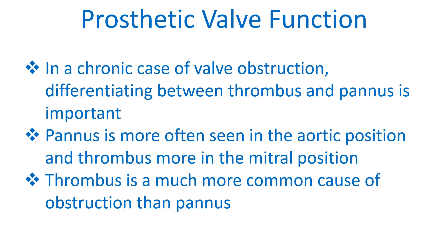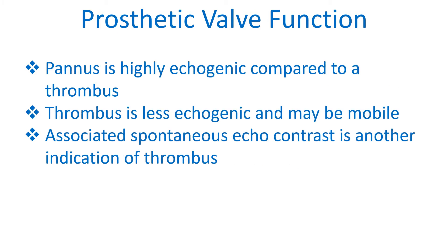In a chronic case of valve obstruction, differentiating between thrombus and pannus is important. Pannus is more often seen in the aortic position and thrombus more in the mitral position. Thrombus is a much more common cause of obstruction than pannus. Pannus is highly echogenic compared to a thrombus, while thrombus is less echogenic and may be mobile. Associated spontaneous echo contrast is another indication of thrombus.